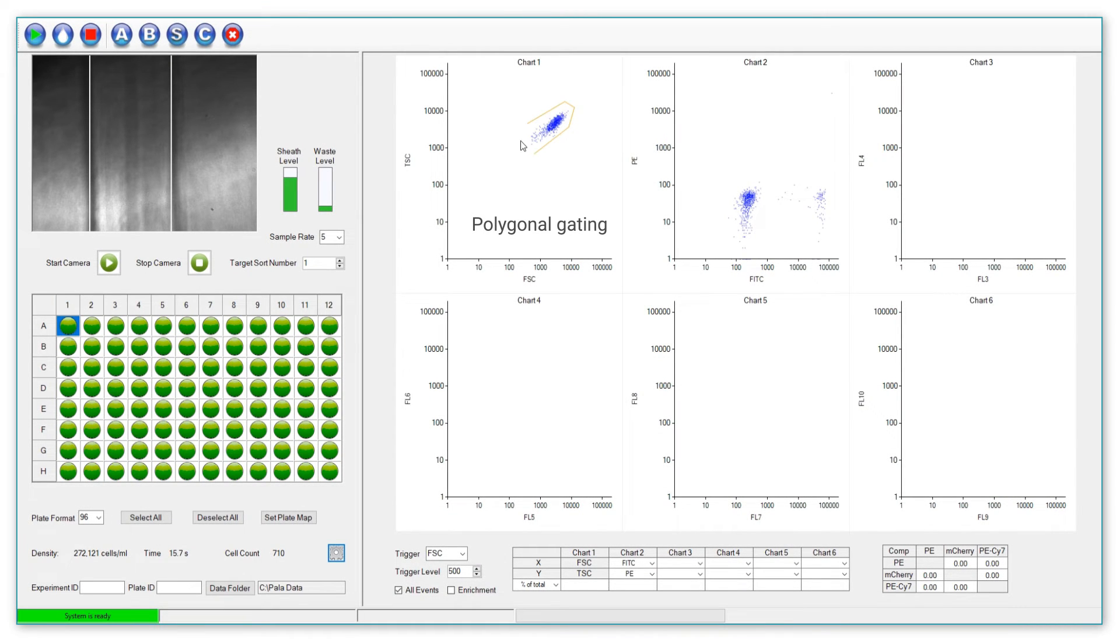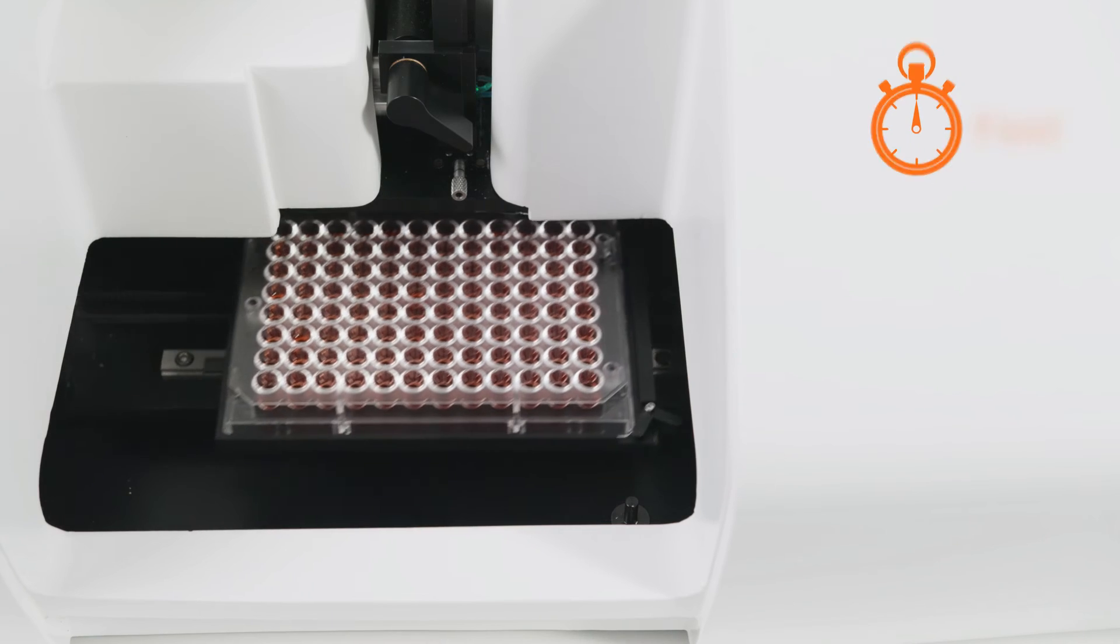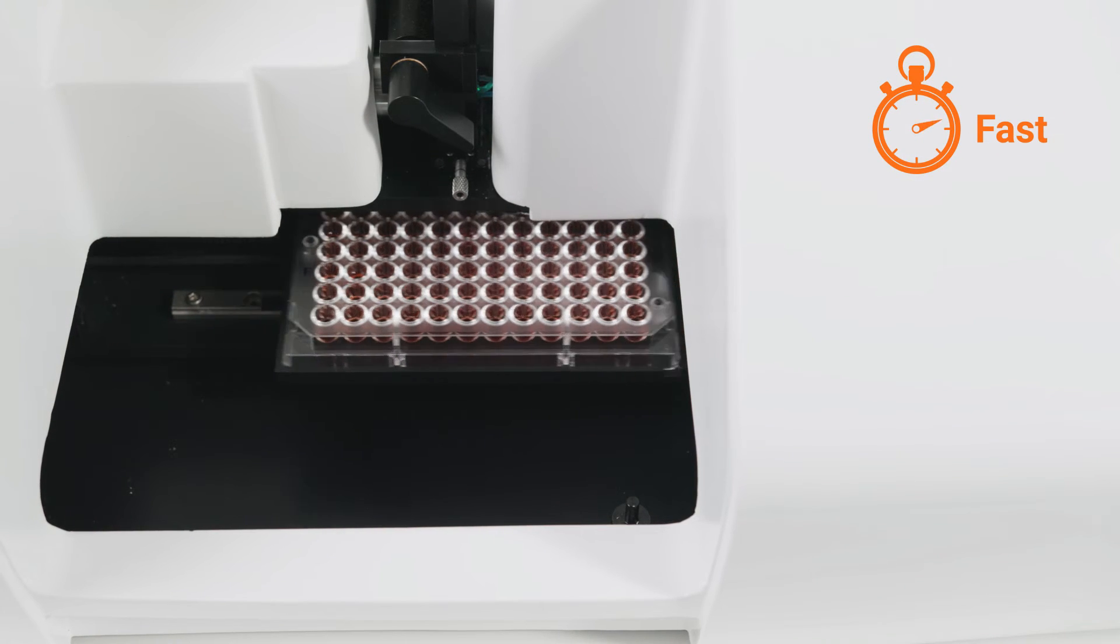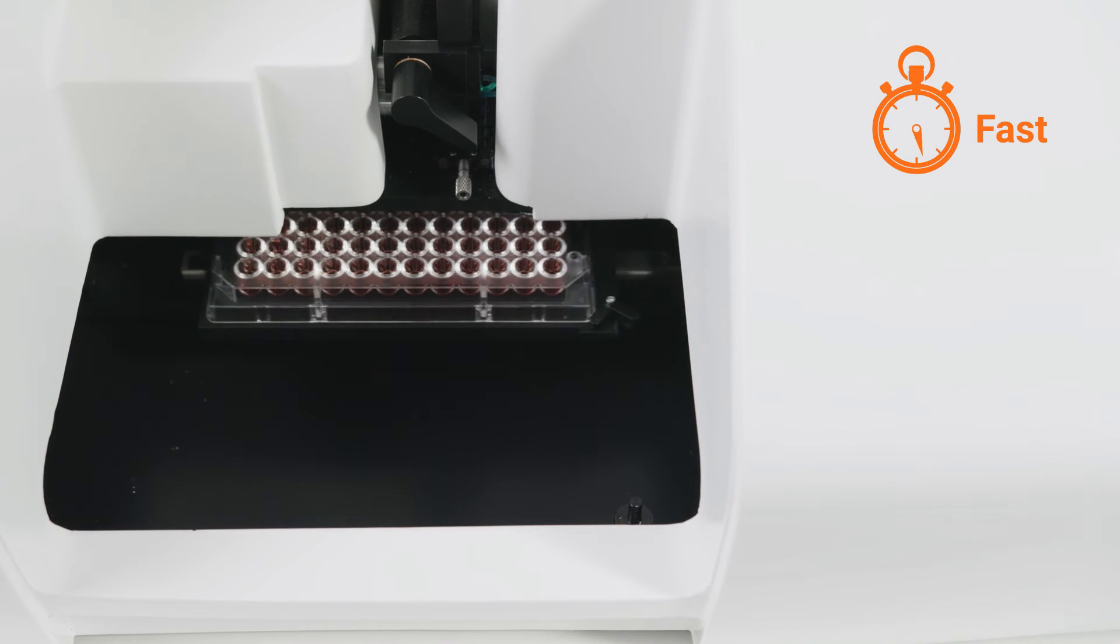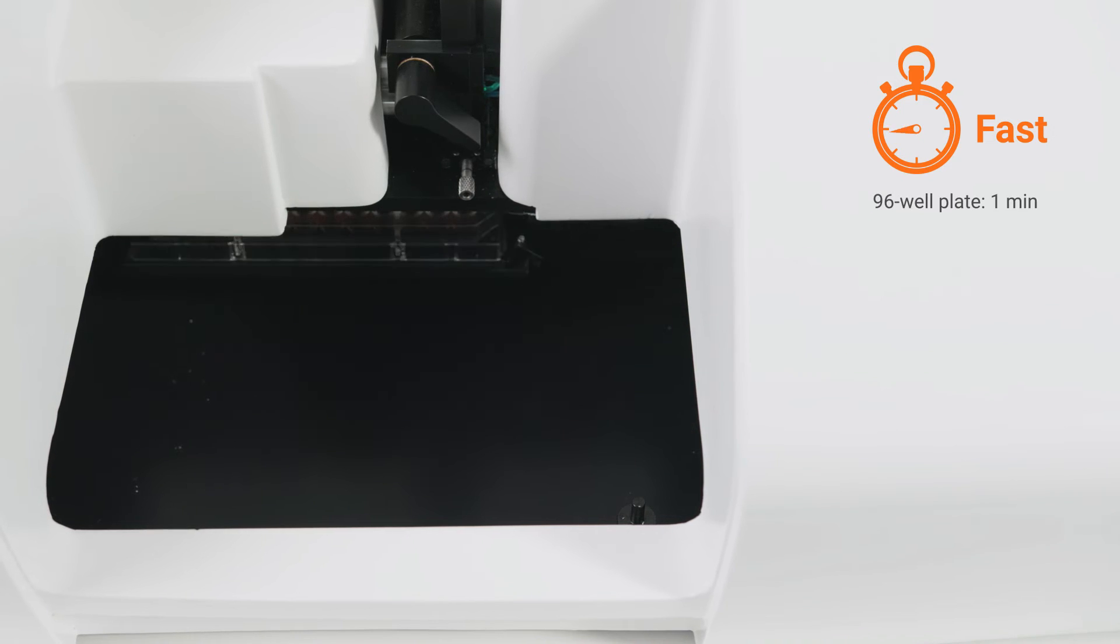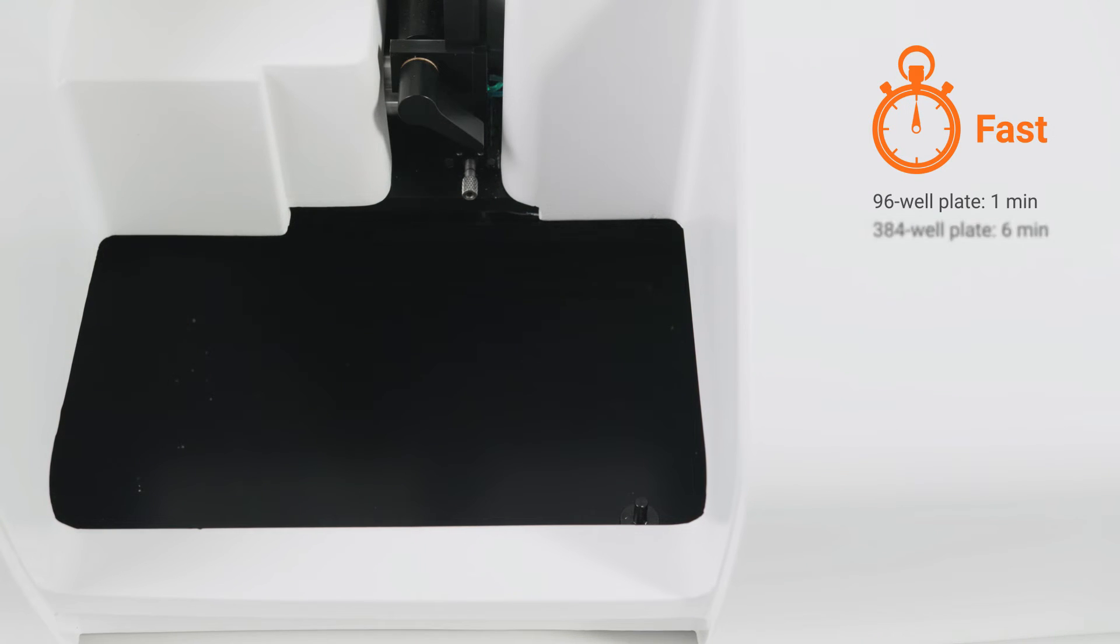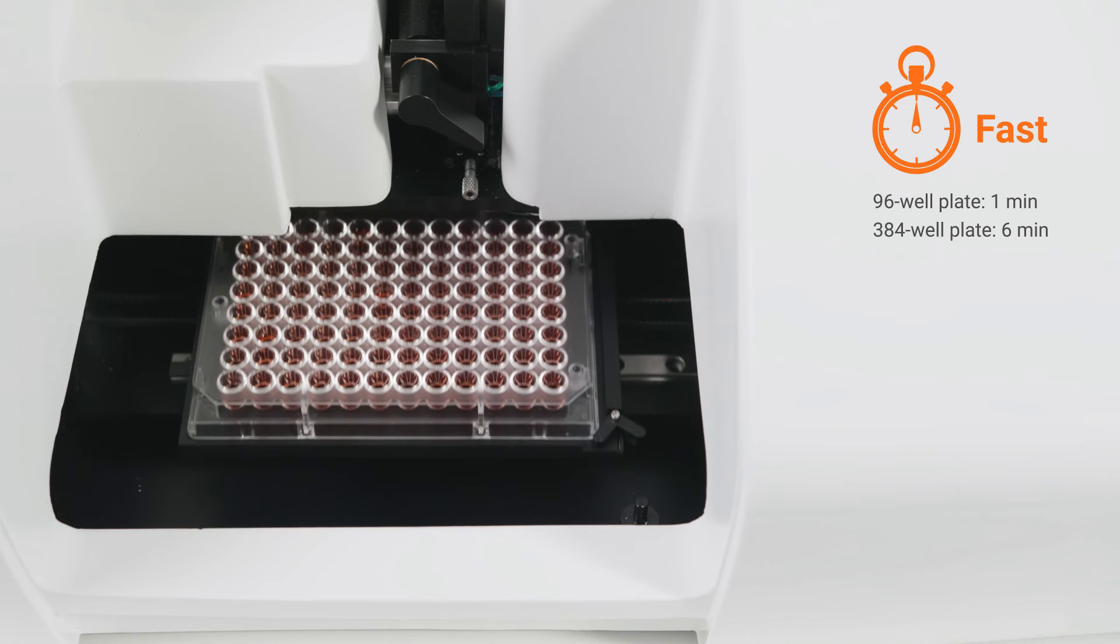Next, simply set up your gating parameters and start the program. The Pala quickly dispenses cells into both 96 and 384 well plates, within one minute for a 96 well plate and six minutes for a 384 well plate.